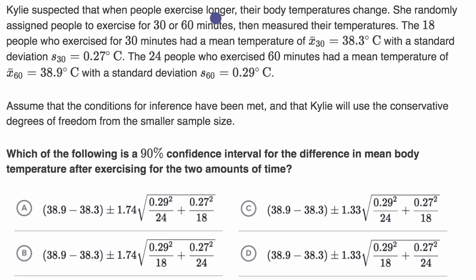Kylie suspected that when people exercise longer, their body temperatures change. She randomly assigned people to exercise for 30 or 60 minutes, then measured their temperatures.